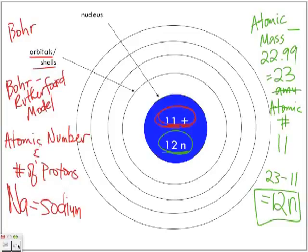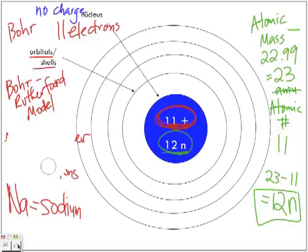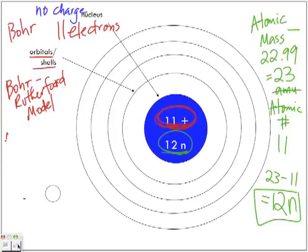Because we're referring to sodium as a neutral atom, there is no ion charge. If it's neutral with no charge, and we have 11 protons, then we will also have 11 electrons. So for a neutral atom, the number of electrons equals the number of protons.